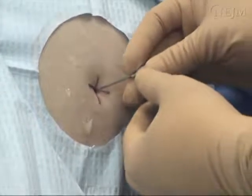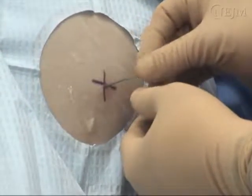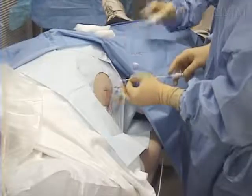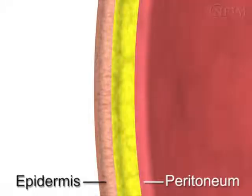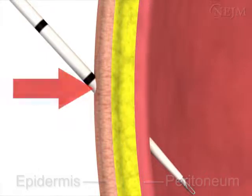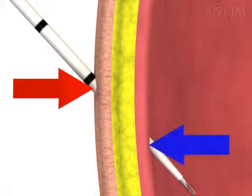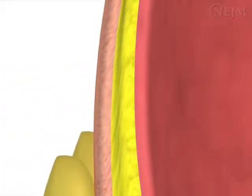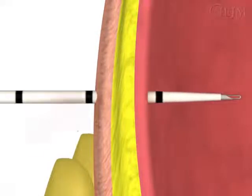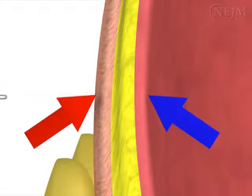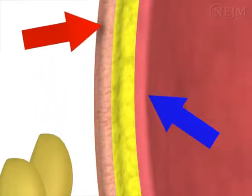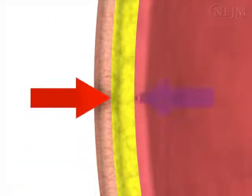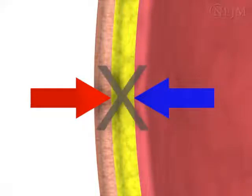Begin by making a small puncture in the skin with either a scalpel or a large gauge needle to facilitate advancement of the paracentesis catheter. Next, advance the catheter through the epidermis. In this video, we will demonstrate an angular entry technique in which the cutaneous site of insertion does not directly overlie the site of penetration into the peritoneal cavity. Alternatively, a z-track technique may be used, in which the cutaneous tissues are pulled 2 cm caudad prior to needle insertion and advancement through the peritoneum. When the catheter is withdrawn at the end of the procedure, the cutaneous entry site will retract to its original position. Both techniques ensure that the cutaneous and peritoneal insertion sites do not directly overlie each other, theoretically minimizing the risk of an ascitic fluid leak following the procedure.